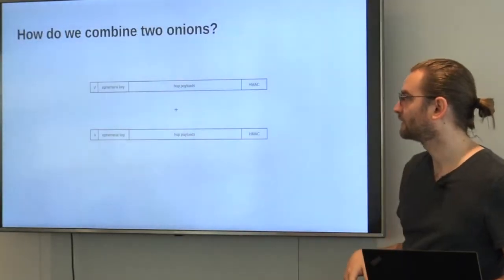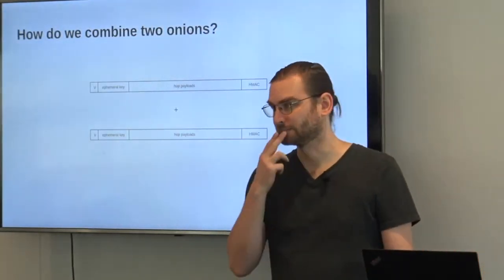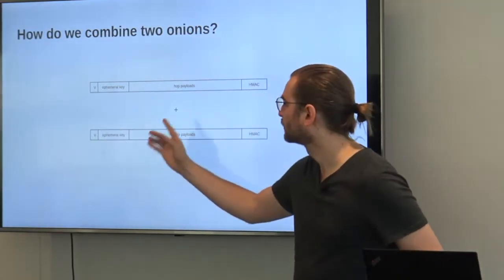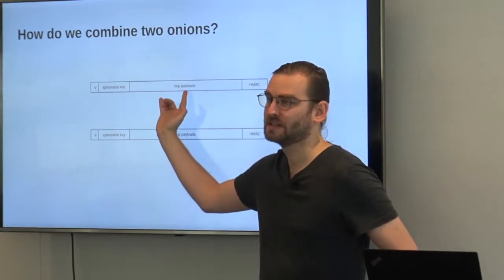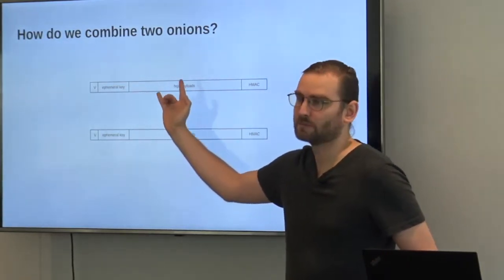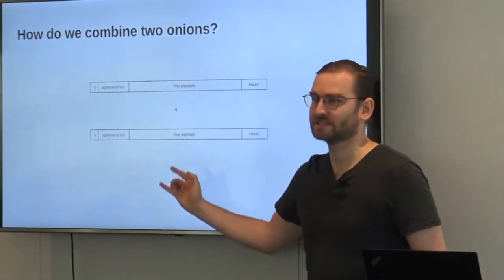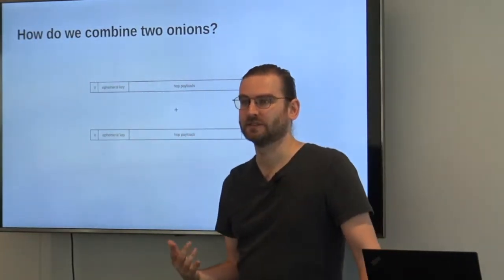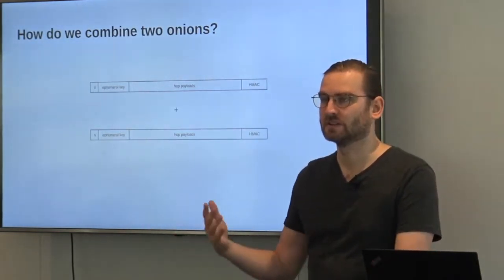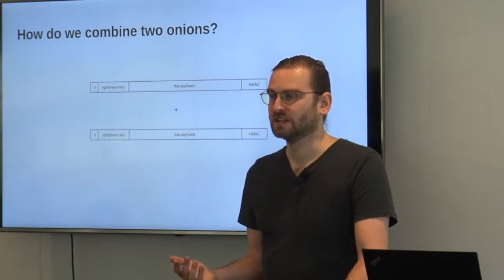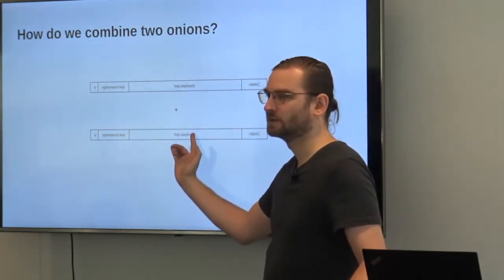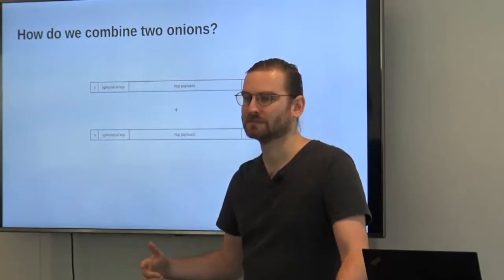We already talked about this but how do we actually combine onions, right? This is how we serialize the onions, the important part is the hop payloads here. These are 1,300 bytes and we want to combine that with something else that is also 1,300 bytes. And since we have seen on Wednesday this is all HMAC, how can we put something that is this big in here plus some signaling bytes.